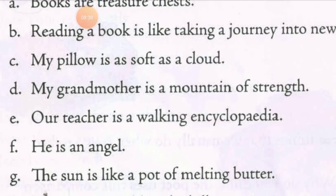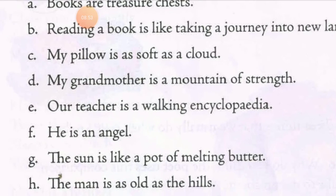G: 'The sun is like a pot of melting butter.' Here simile is used — the word 'like' is used to indicate simile. Yahaan par 'like' word ka use kiya gaya hai, so it is also a simile. We will put an S in the box.